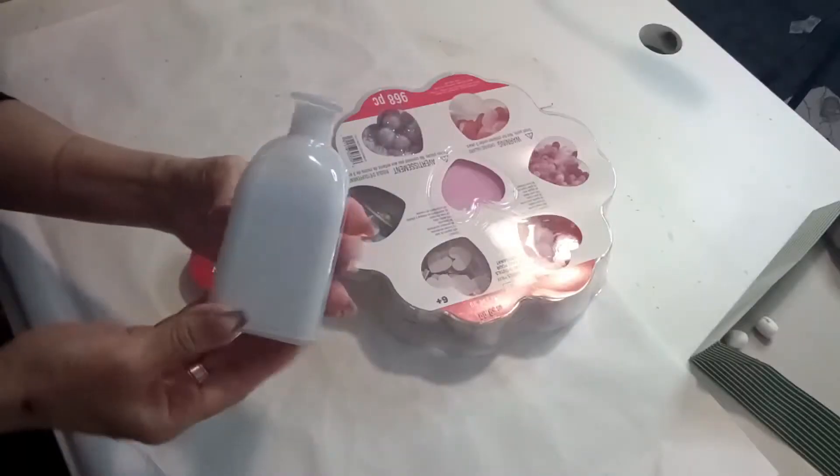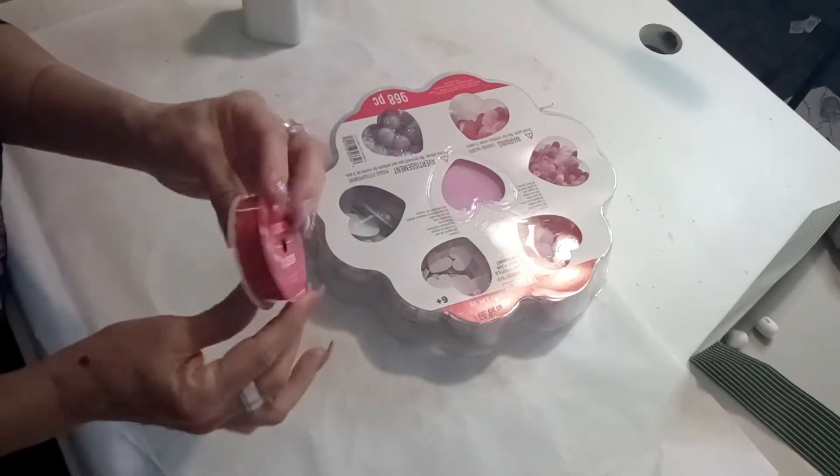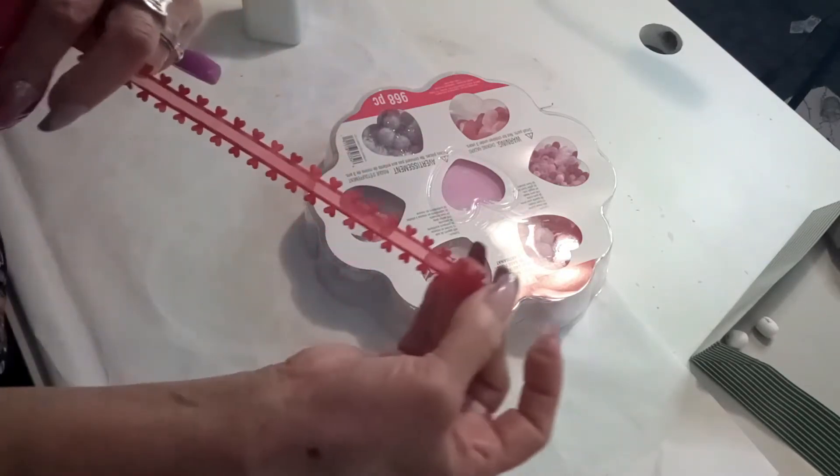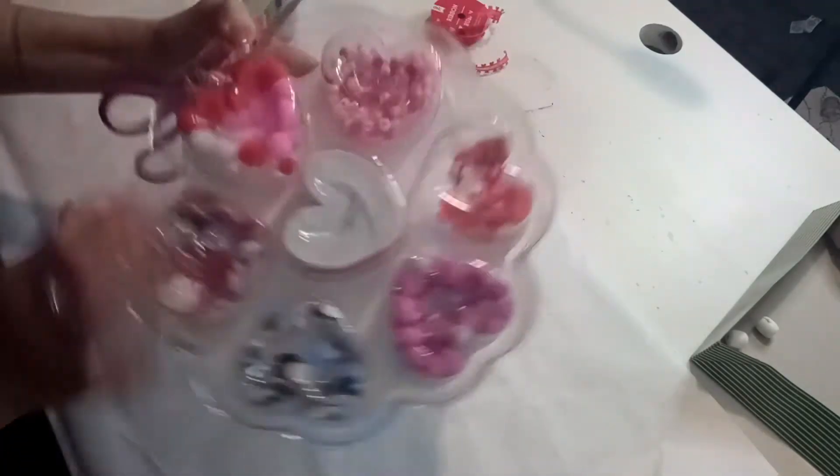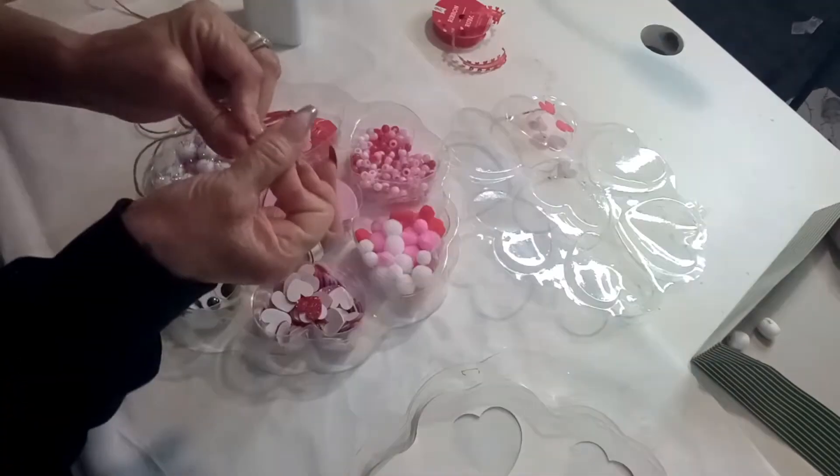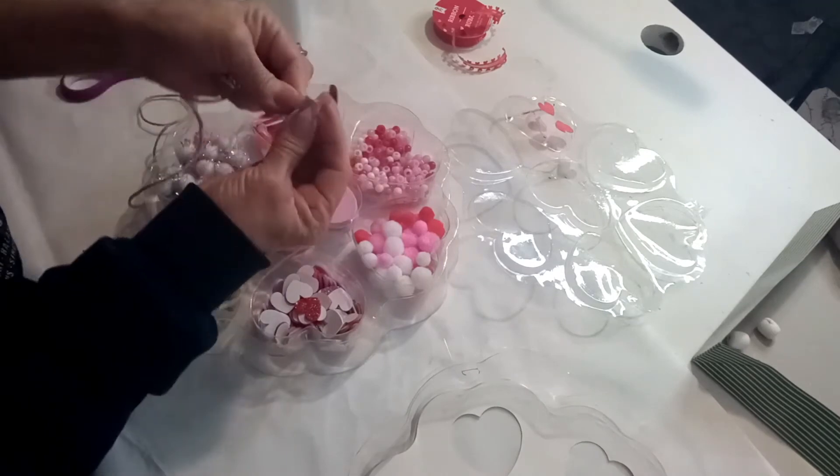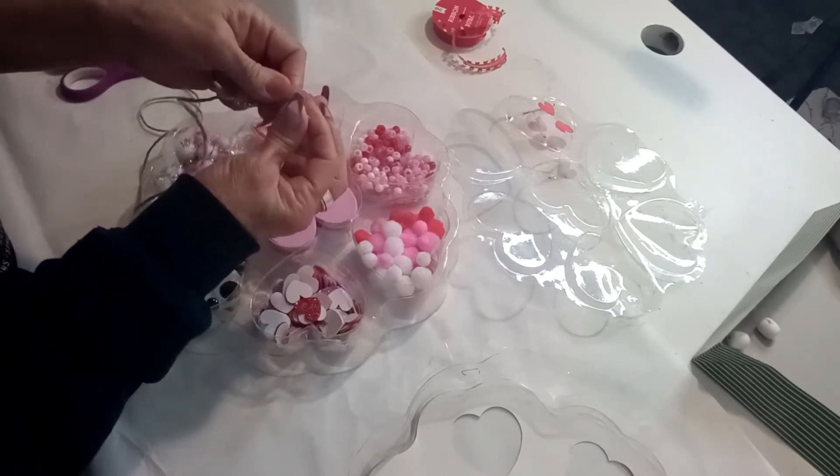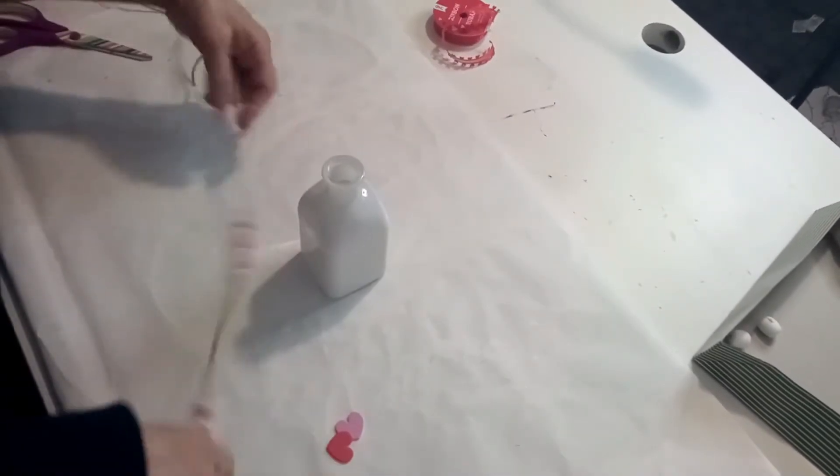Taking this white vase from Dollar Tree and this ribbon also from Dollar Tree, they have little hearts on top and in the bottom. I also got this last year from Michael's. I will be using the beads. They come in white, pink, and red. I'm going to string them with this jute twine.